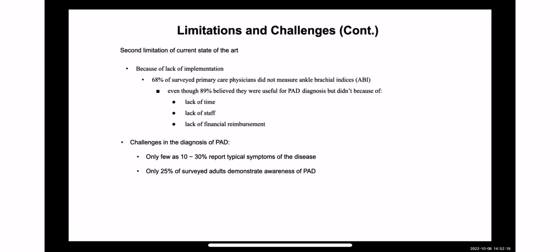An additional limitation is the lack of implementation. In a survey with primary care physicians, 68% of them didn't measure the ABI — the ankle-brachial index — which is one of the most predictive parameters for peripheral artery disease, even though 89% of them believed this parameter is useful for PAD diagnosis. According to the survey, they didn't perform this measurement because of lack of time, lack of staff, and lack of financial reimbursement.